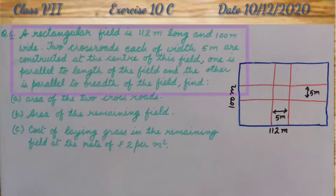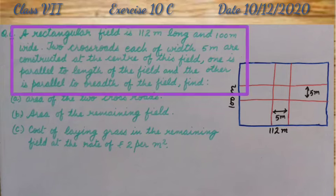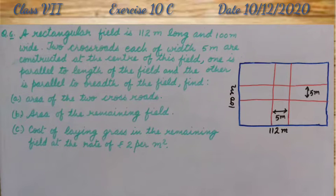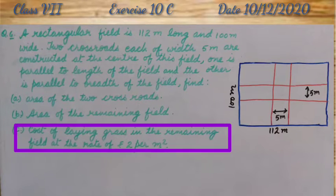A rectangular field is 112 meter long and 100 meter wide. Two crossroads, each of width 5 meter, are constructed at the center of this field. One is parallel to length of the field and the other is parallel to breadth of the field. Find: A) area of the two crossroads, B) area of the remaining field, C) cost of laying grass in the remaining field at the rate of rupees 2 per meter square.